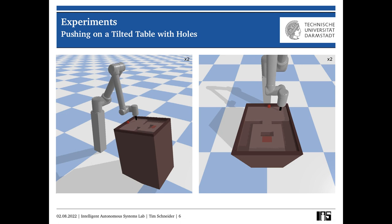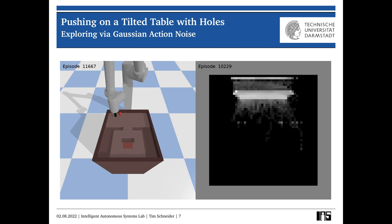Now, unsurprisingly, if you simply rely on Gaussian noise for exploration, like many reinforcement learning algorithms do, we simply keep dropping the ball every time and never really leave the lower half of this table, as you can also see on this ball position histogram here on the right. And that renders classical reinforcement learning methods like SAC or MBPO completely unable to solve this task.